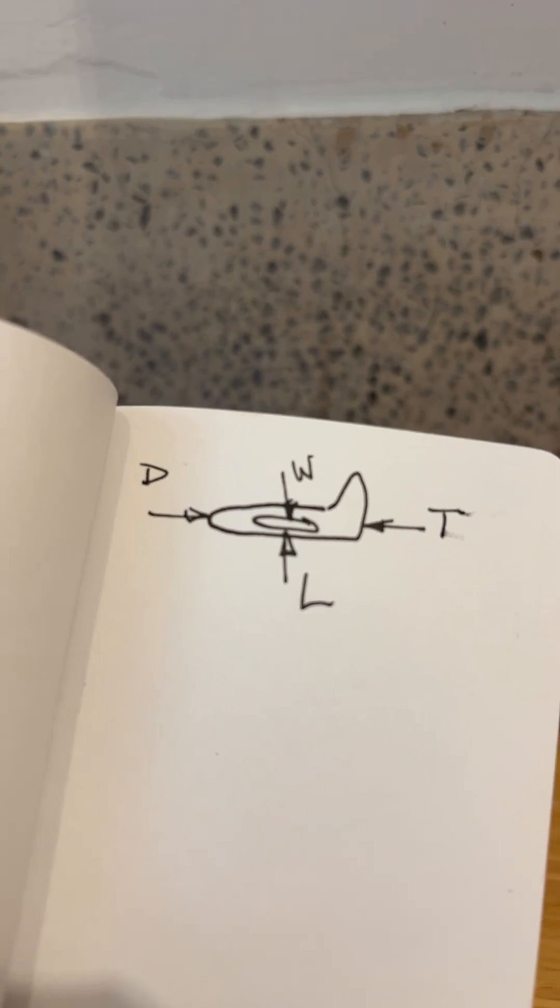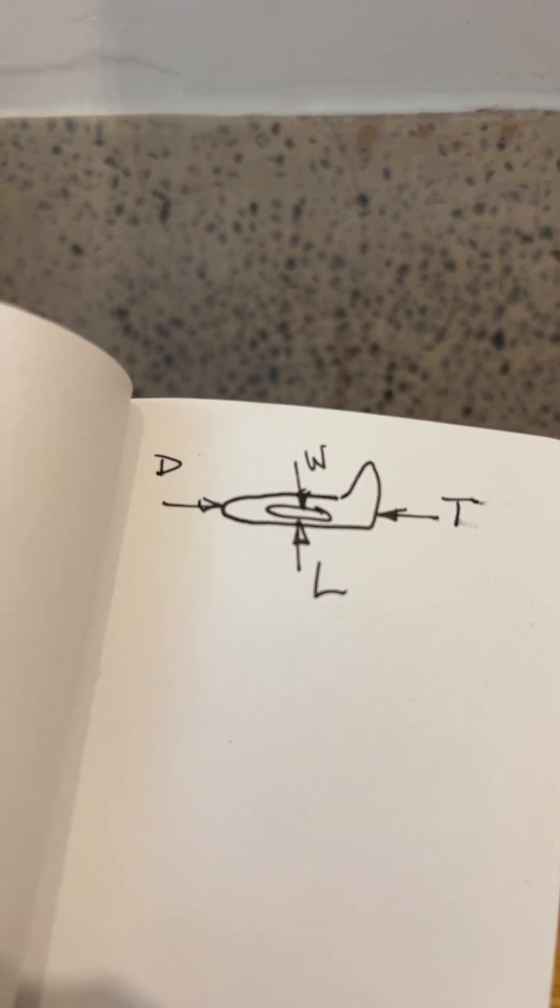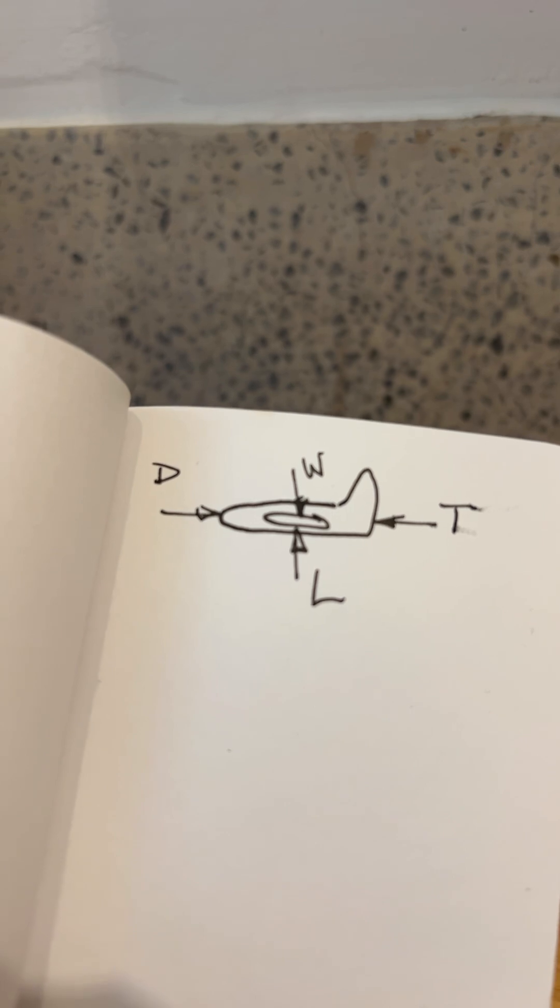Once again, we're going to sum the vertical forces: W minus L or L minus W equals MA.